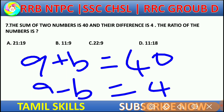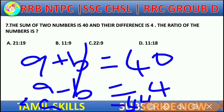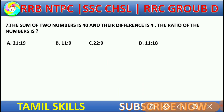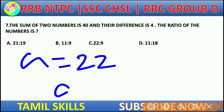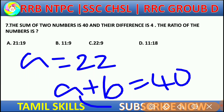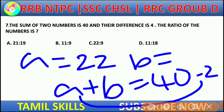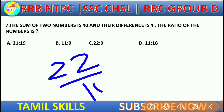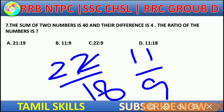A plus B equals 40. That is the ratio of the numbers, A by B. Solving: 2A equals 44, so A equals 22. Then A plus B equals 40, so B equals 18. The ratio is 22 by 18, answer B.